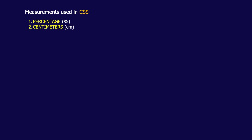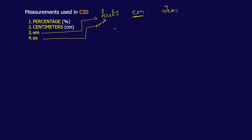Next we have centimeters. You can also use em. Em is usually used for fonts in CSS — it is the default size of the font. If you give two em, it multiplies the existing default font size by two. Next you have ex, which is also used for fonts. Ex equals the default height of the small letter 'x'. If you give two ex, it multiplies that height by two, and three ex multiplies it by three.